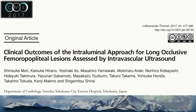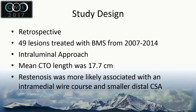Another study looked at long chronic total occlusions using IVUS — 49 lesions treated with bare metal stent. Restenosis was more likely associated with either a smaller distal cross-sectional area or an intermedial wire path, not necessarily subintimal. It appears that the further out you go with some damage to the media, the more restenosis you may have.